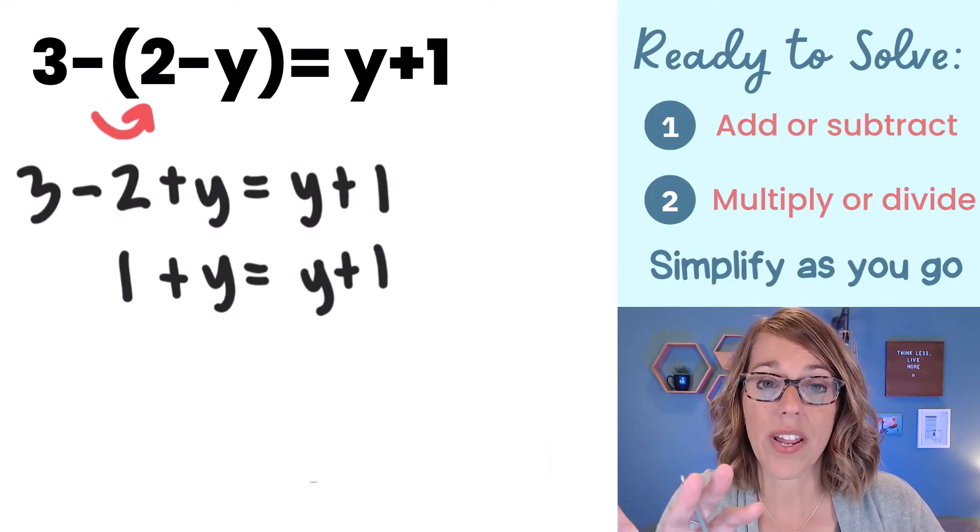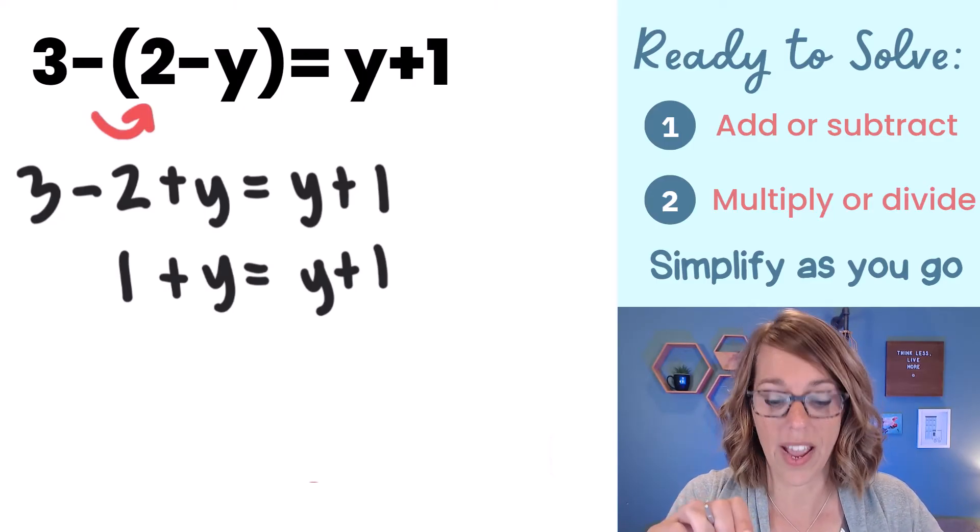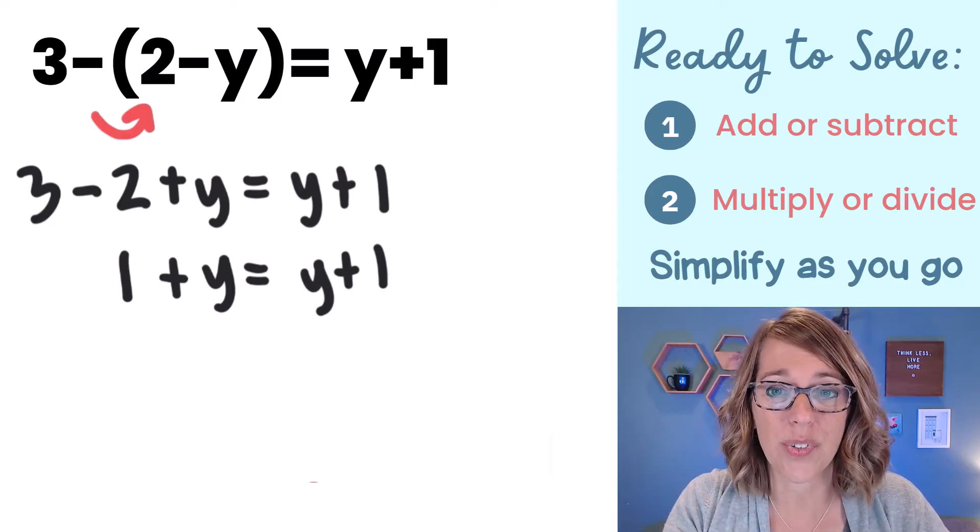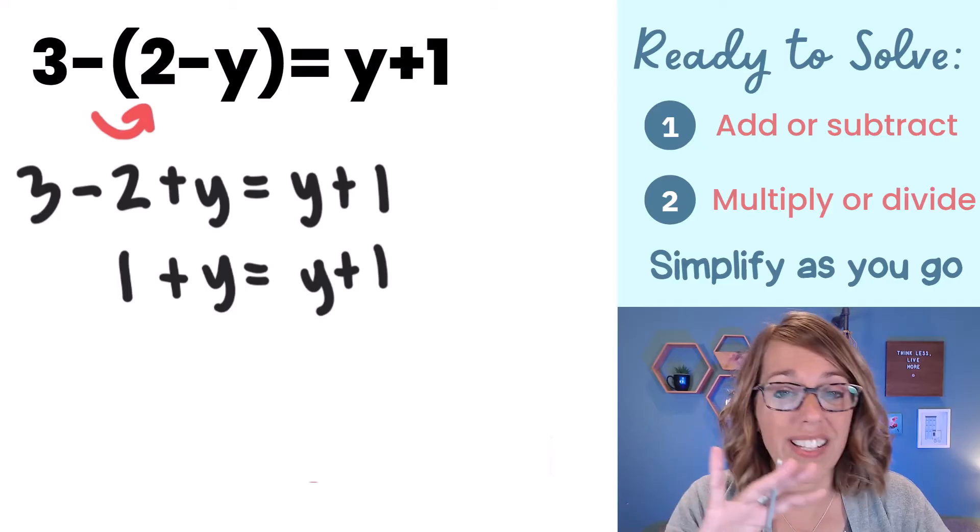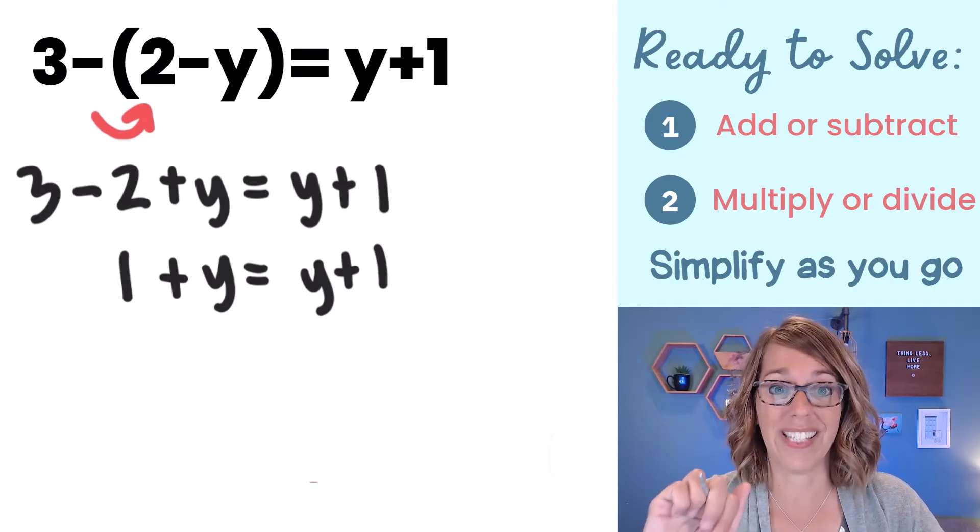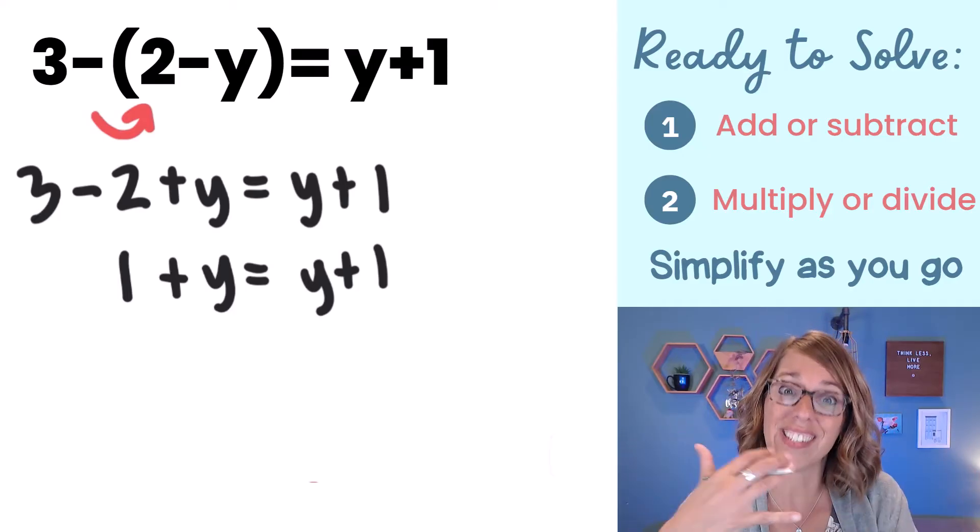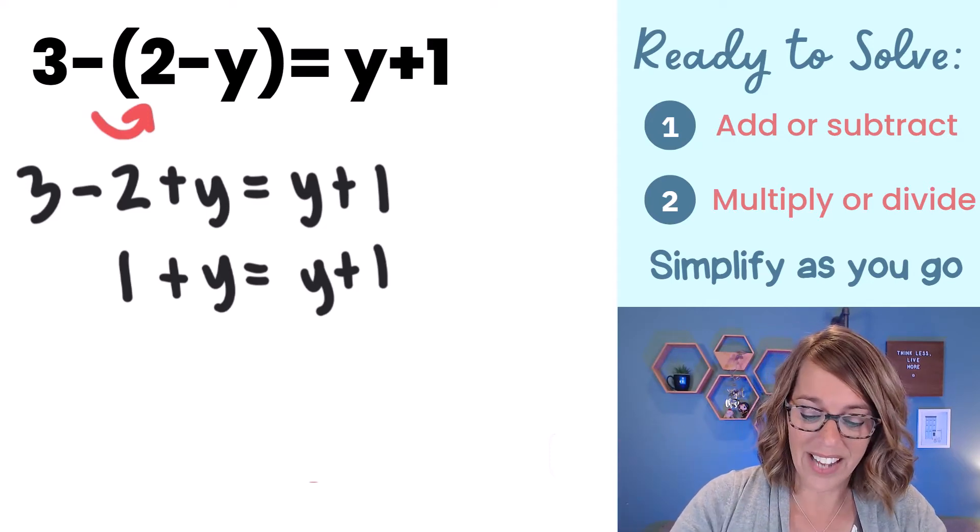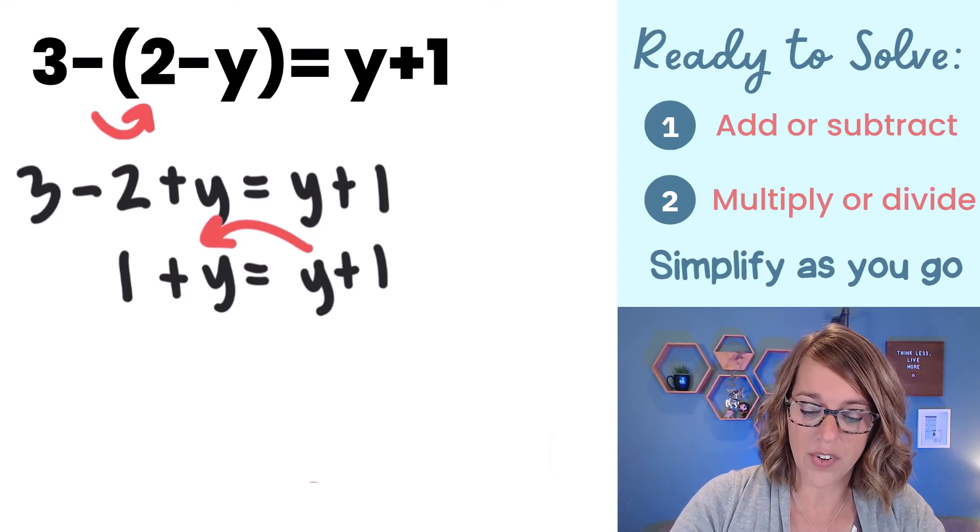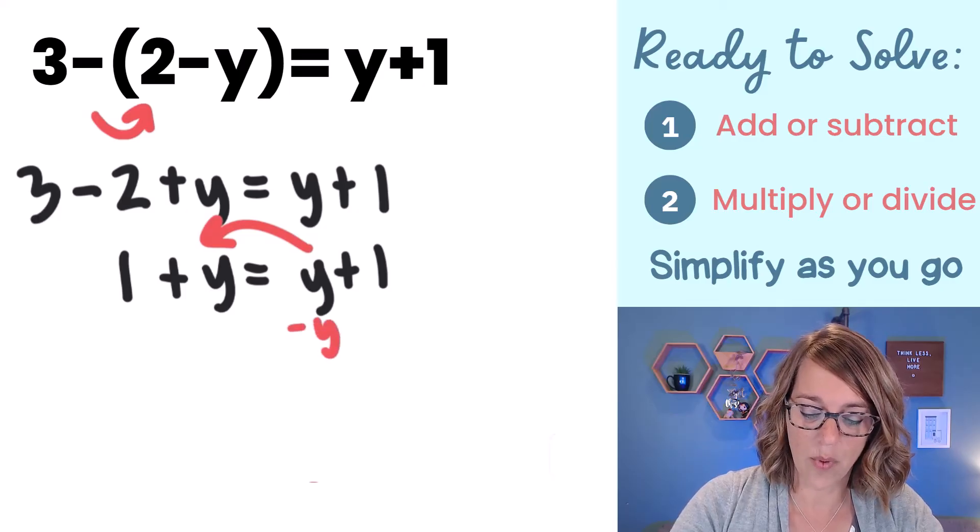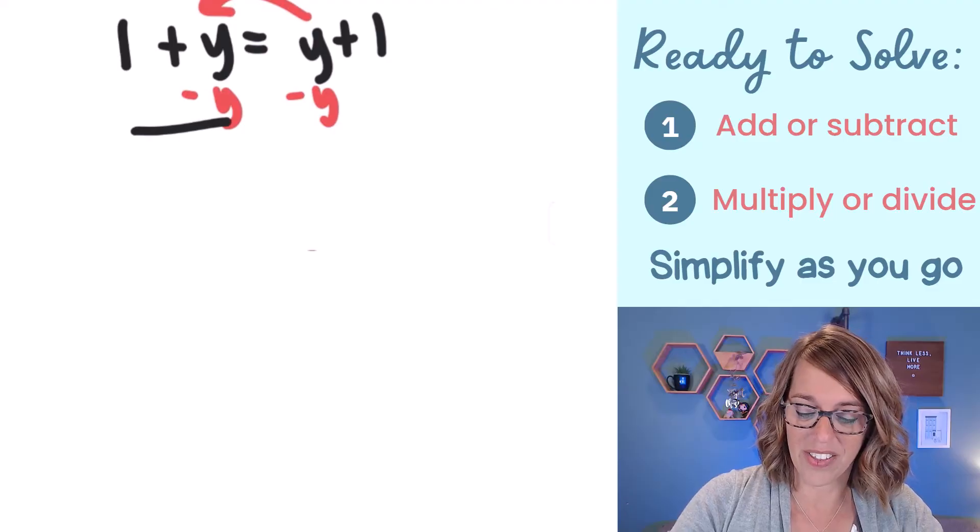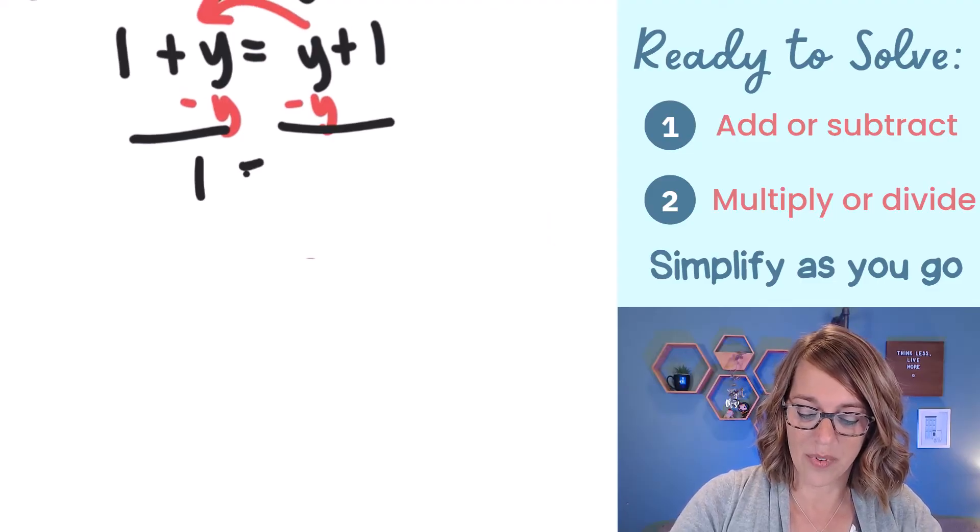Now you could stop right here because no matter what number you put in for y, whether it's like 5 or 823.2, that number plus 1 is always going to equal itself, right? So I've got this true equation no matter what. Now you could take that one last step and try and combine your y terms, subtract a y. But once I do that, I end up with 1 equals 1.